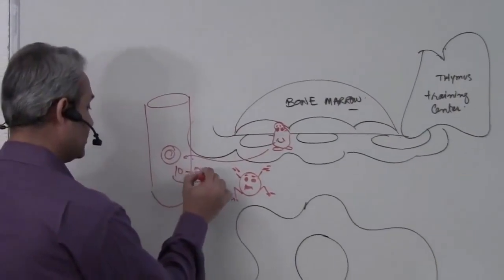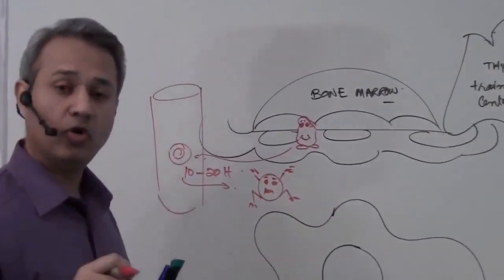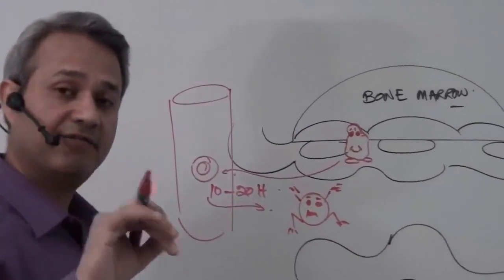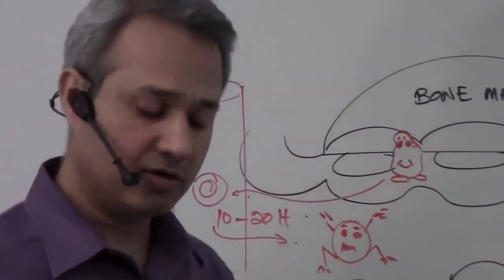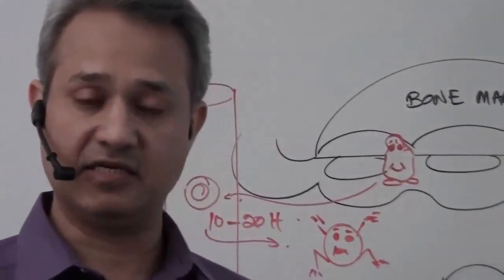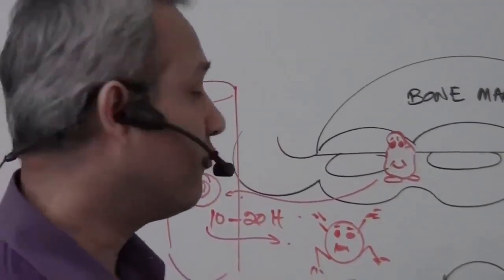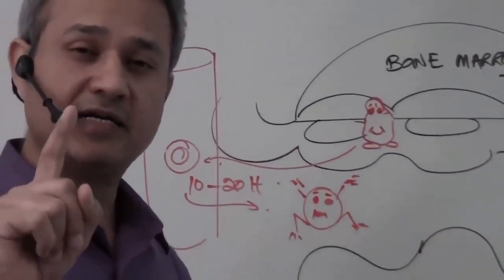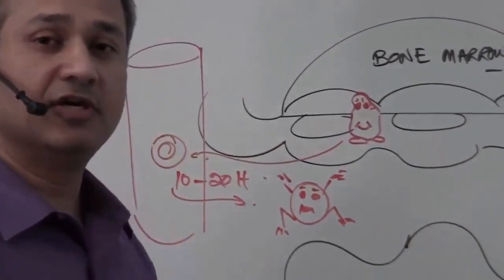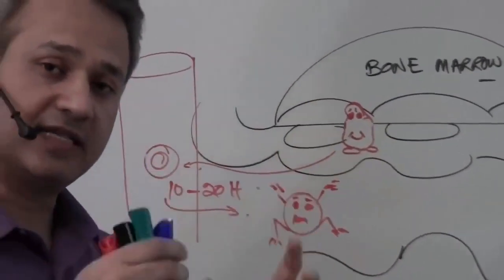So 10 to 20 hours, monocyte is going to get out, or chemotactic factor is going to cause the monocyte to get out. We have talked about how the diapedesis occur, how the cells move from the blood vascular system into the tissue. I did that in detail in the neutrophils, so go back to that lecture.